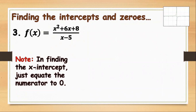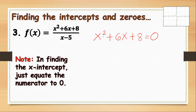Number 3: f(x) equals x squared plus 6x plus 8 all over x minus 5. Let's find the x-intercept first. We equate the numerator to 0: x squared plus 6x plus 8 equals 0. At this point, we have a quadratic equation because the degree is 2. We need to factor this quadratic equation to find the value of x.